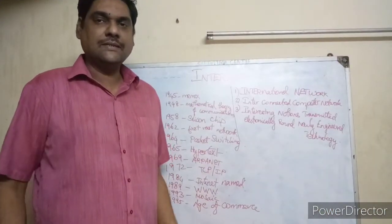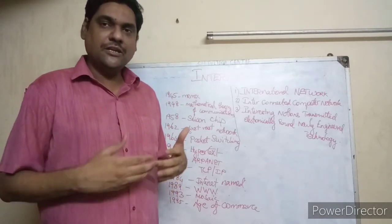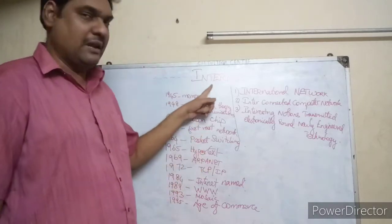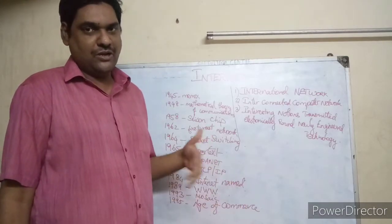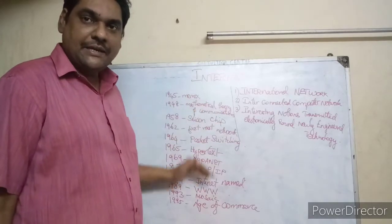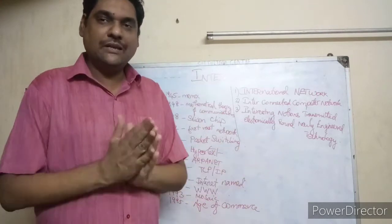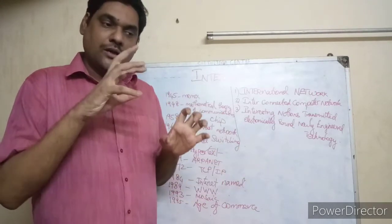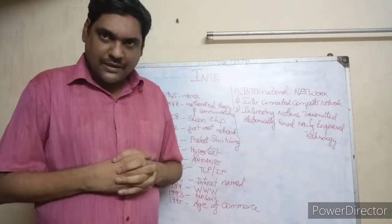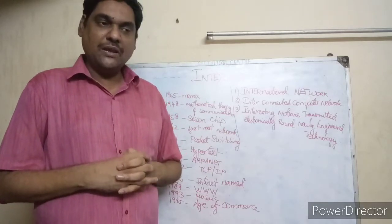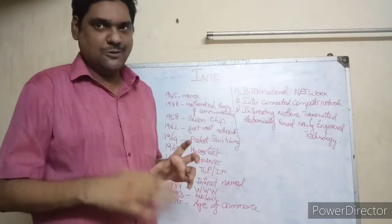Hello children. Last session we saw about what is a computer network and the history of computer networks. As a continuation of that, today we are going to see about the internet and the history of the internet. A network of networks is called the internet. We are going to connect all the networks — that is called the internet.